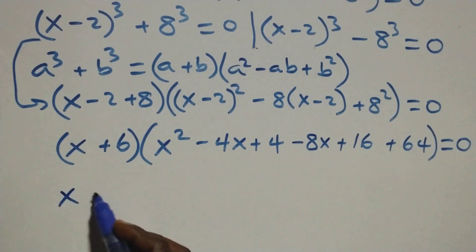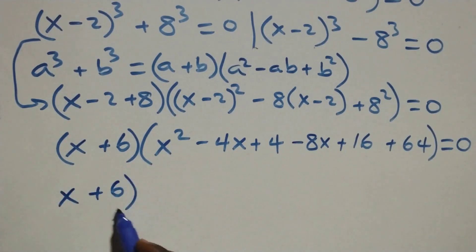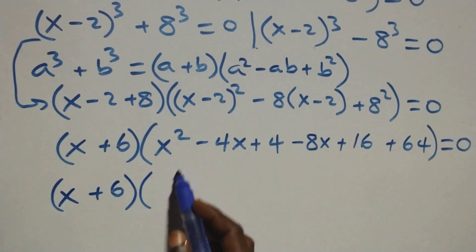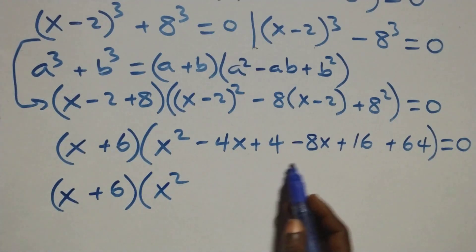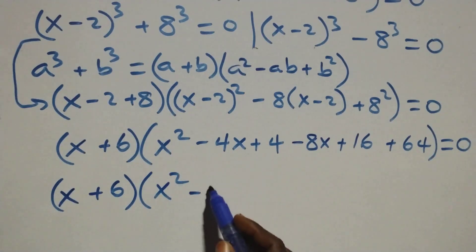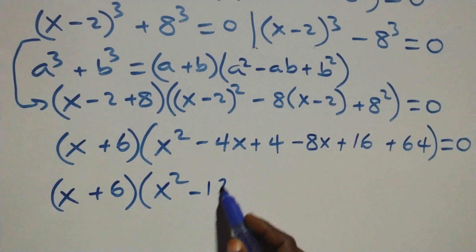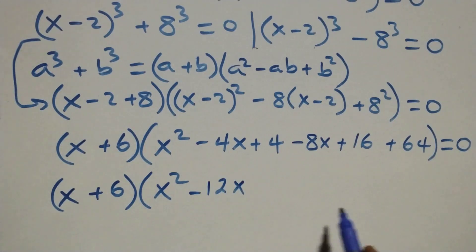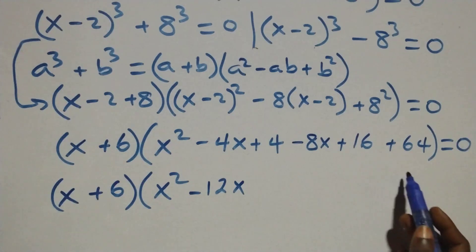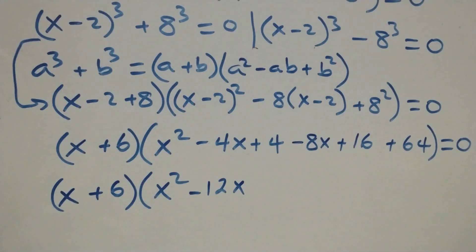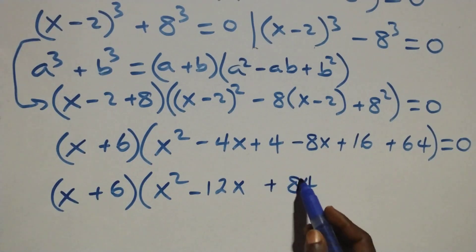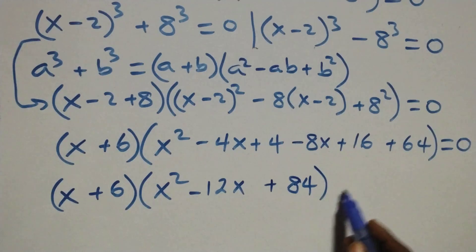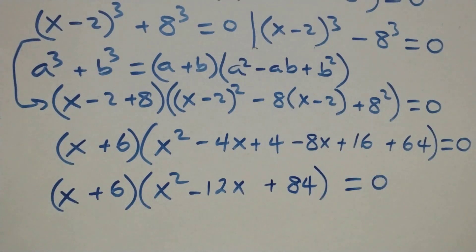So we have (x + 6) times, open bracket: x² minus 4x minus 8x gives minus 12x, and 64 plus 16 gives 80, and 80 plus 4 gives plus 84. So it becomes (x + 6)(x² − 12x + 84) = 0.